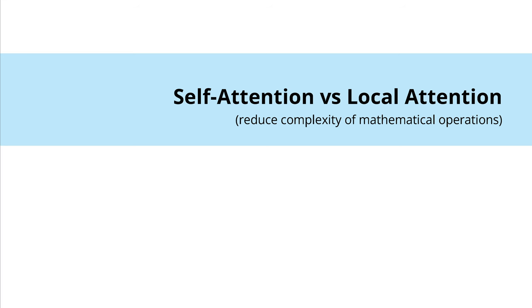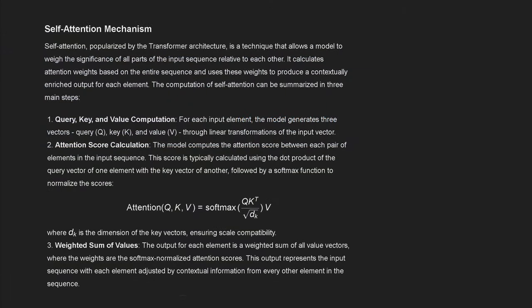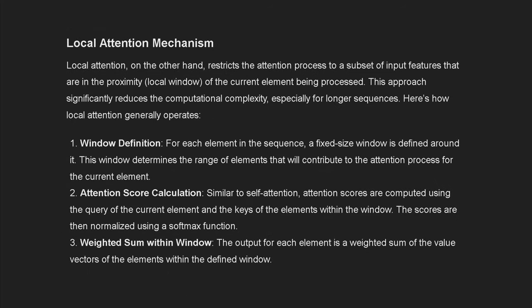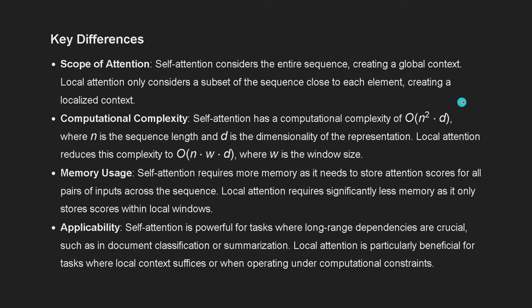We have to reduce the quadratic complexity of a transformer that has a self-attention mechanism to a local attention mechanism for a simplified mathematical operation. You know self-attention — query, key and value computation, how you compute the attention scores and the weighted sum of values. And you know the local attention mechanism — this restricts our attention process to a subset of input features that are in the proximity or in the local window of a current token element being processed. This reduces significantly computational complexity.